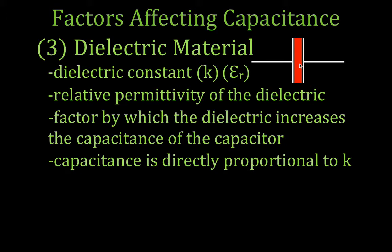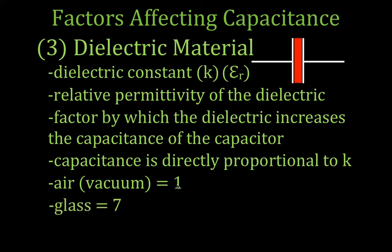As the dielectric constant increases, the capacitance also increases. Some materials have a dielectric constant greater than 1. A lot of times, especially when you're starting out, you'll see problems with capacitors and it'll say there's an air-filled gap between the plates of the capacitor, because air is kind of the base unit, so to speak, and that has a dielectric constant of 1. Other materials such as glass and even water have higher dielectric constants. Glass, depending on the type, has a dielectric constant around 7. Water, which is a polar molecule and can be easily polarized, has a dielectric constant of 80, which is relatively high for most materials.